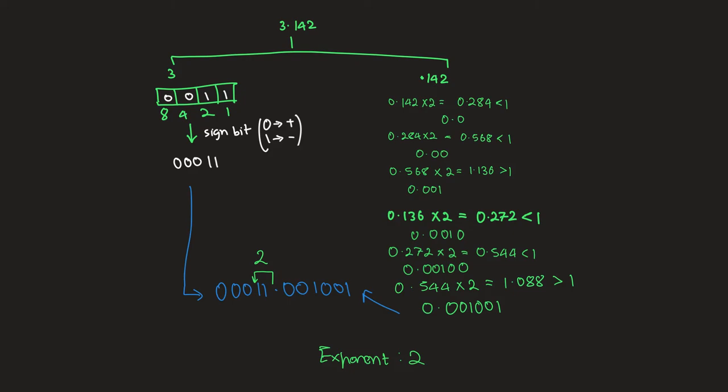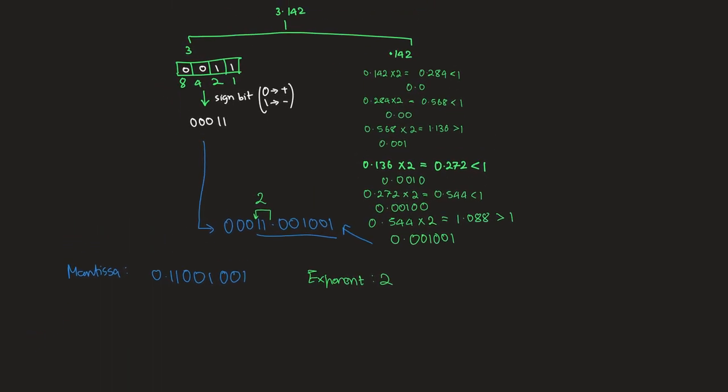We have the mantissa as 0.1100100100. It's basically all done right now. We just have to convert the exponent into binary. That's pretty simple right, we use the same format that we did over here and it would give us 0010. Now we have the mantissa and the exponent, we just need to express them in the 10 plus 6 bit format.